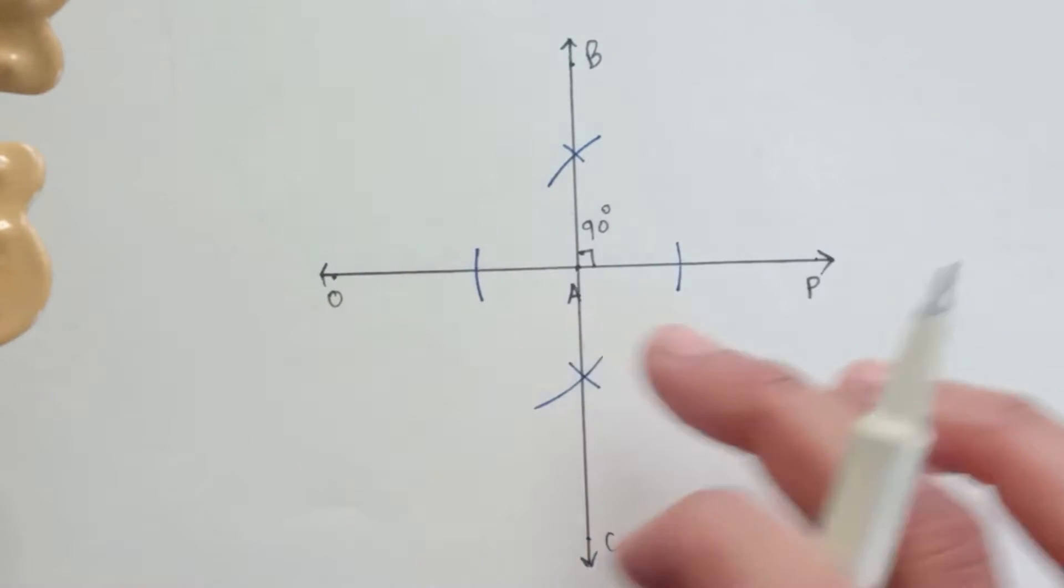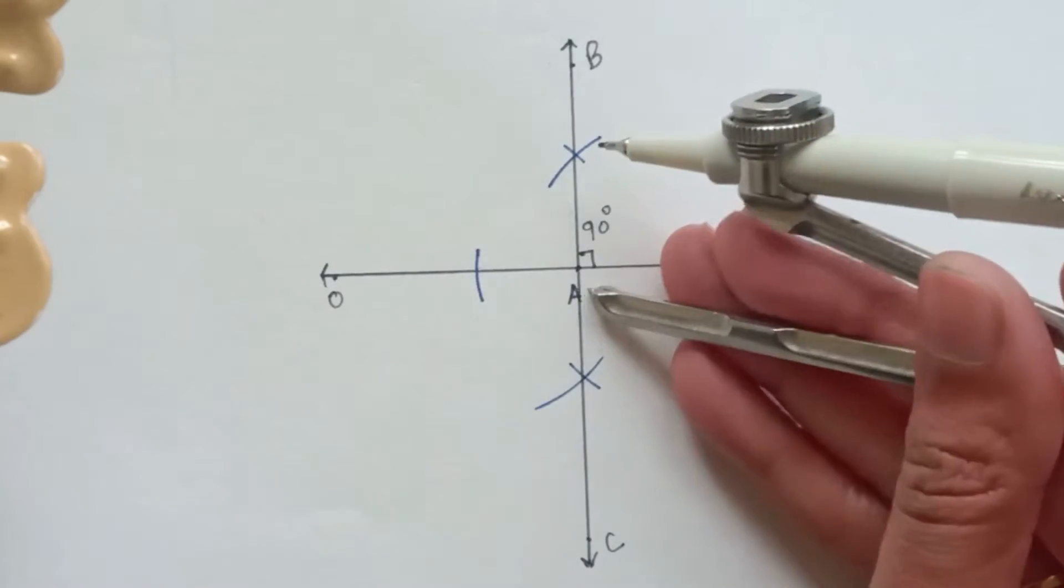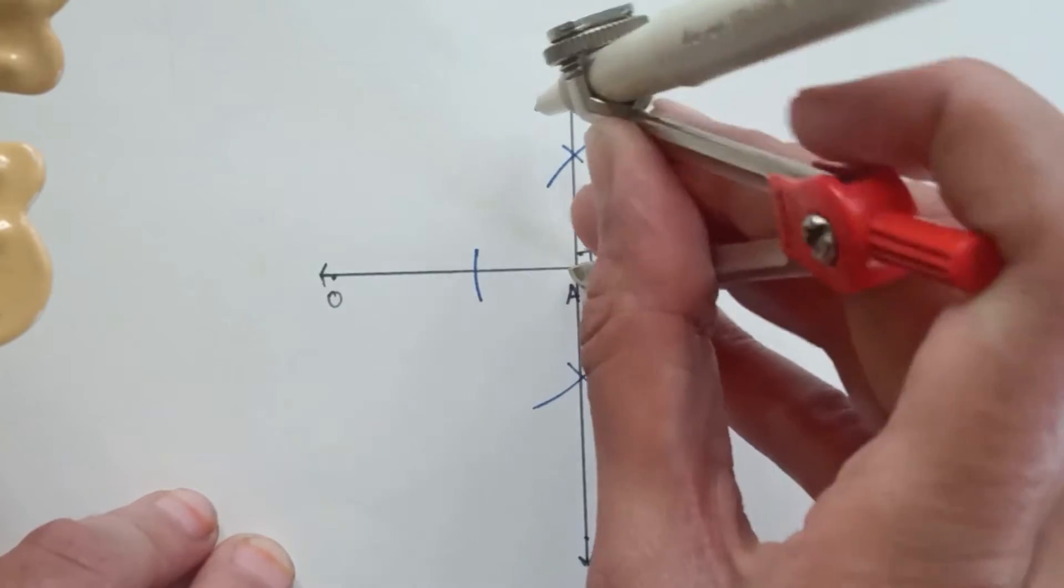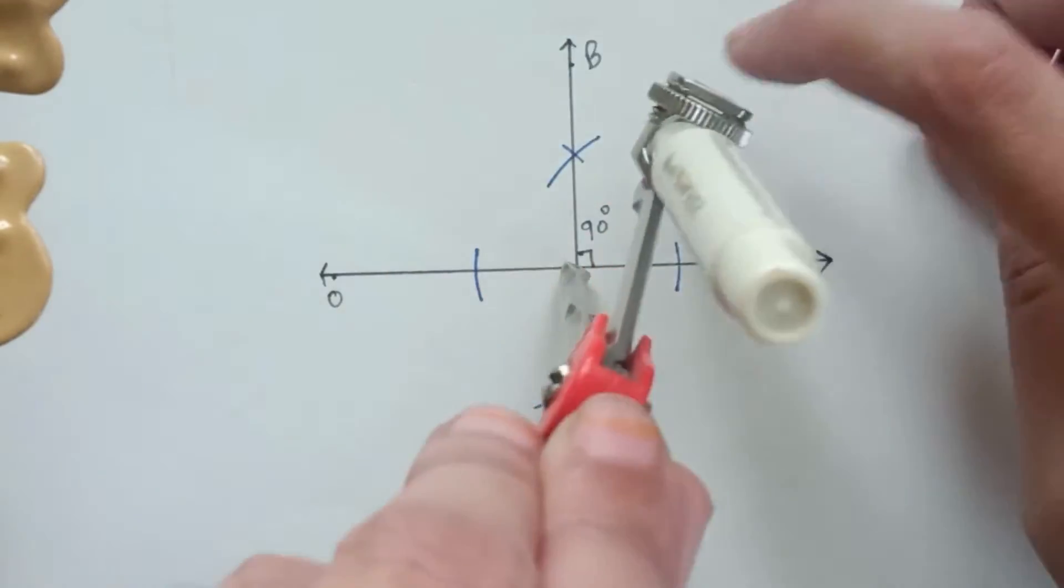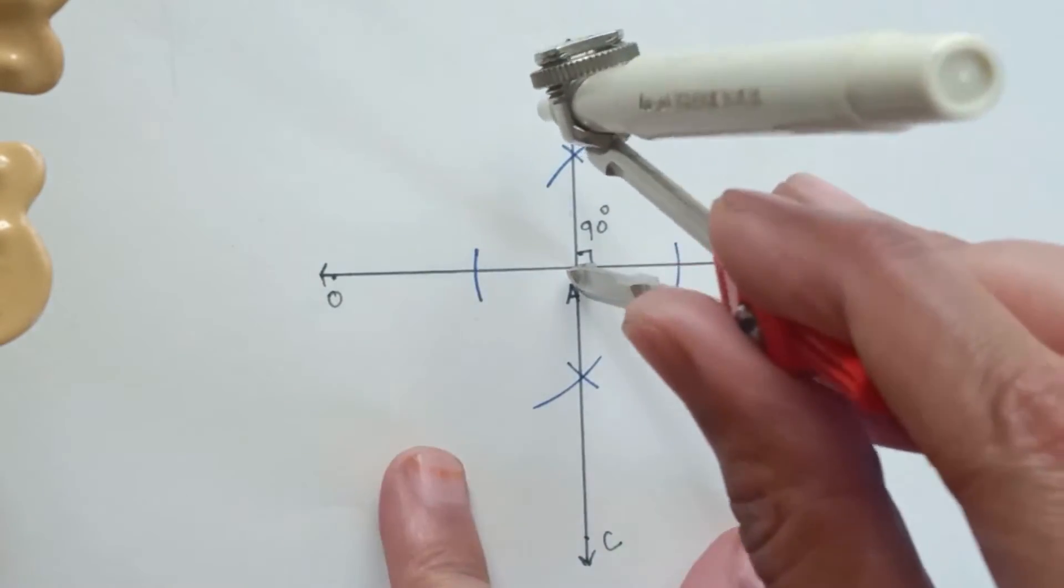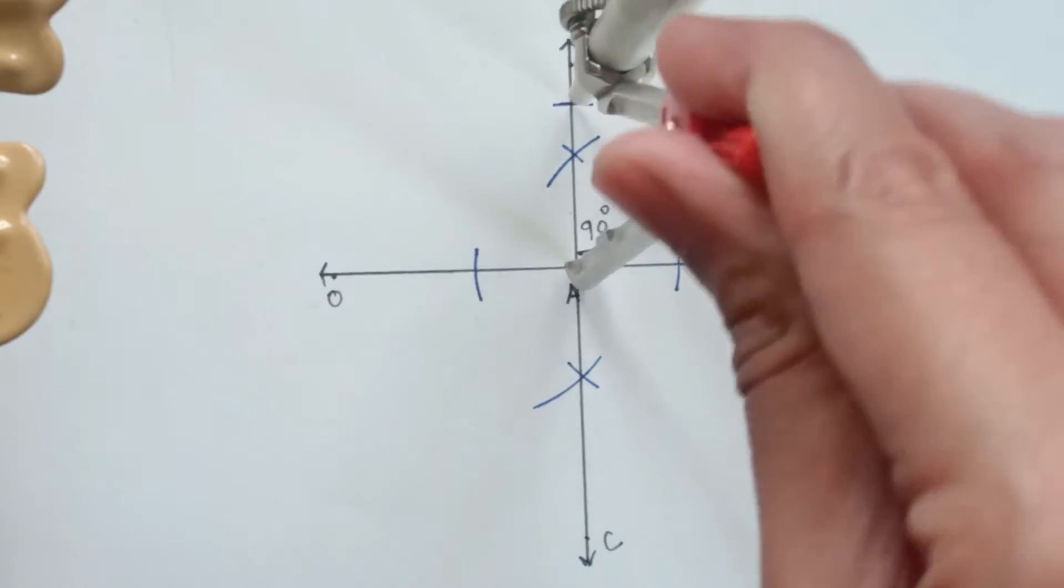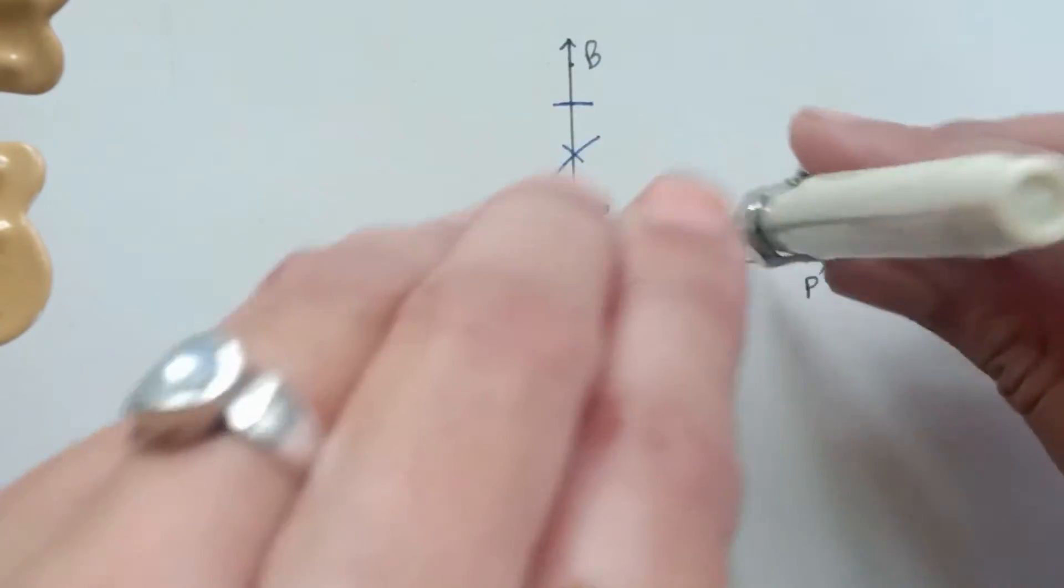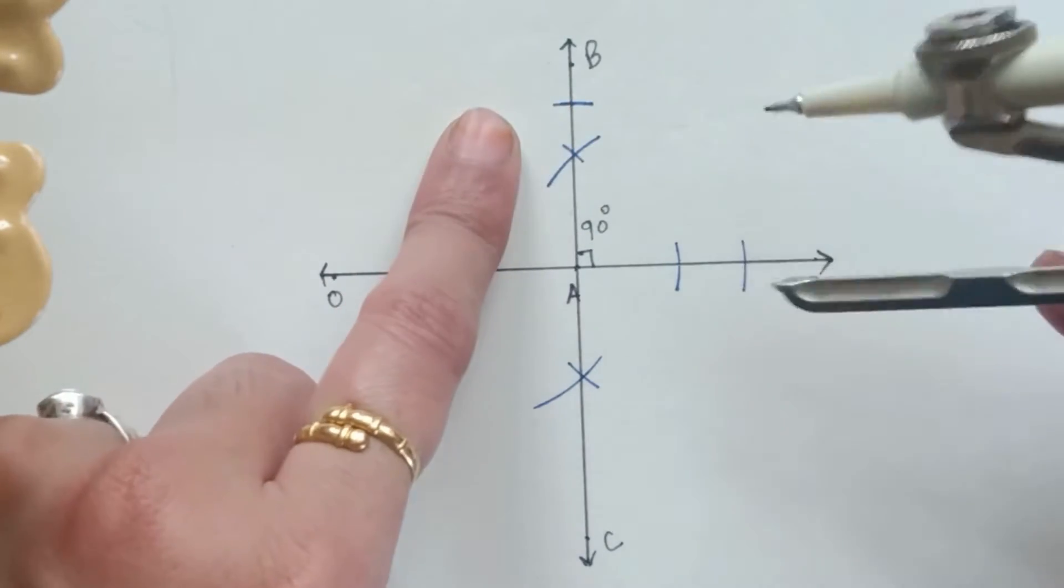So here we get a 90 degree angle. All these four angles are 90 degrees angles. Now take the compass again, take any random amount of distance in the compass. Now we are drawing a 45 degrees angle on both the sides. Mark one arc on AB and mark another arc on AP.